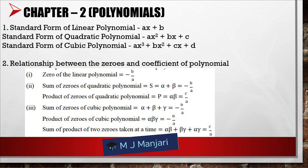Chapter 2: Polynomials. The standard form of a linear polynomial is AX plus B. The standard form of a quadratic polynomial is AX² plus BX plus C. The standard form of a cubic polynomial is AX³ plus BX² plus CX plus D. Relationship between zeros and coefficients: the zero of a linear polynomial is equal to minus B by A. The sum of zeros of a quadratic polynomial: alpha plus beta equals minus B by A. The product of zeros of a quadratic polynomial: alpha into beta equals C by A.